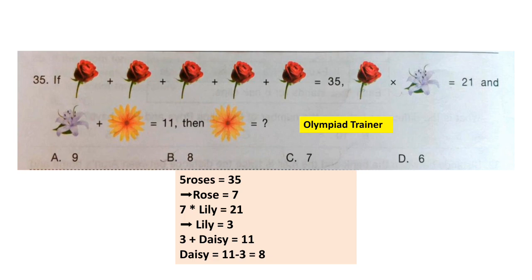Question 35: Look at the problem — you have to find out the values of flowers. Five roses equal 35, so one rose = 35 ÷ 5 = 7. Using that in the second expression, rose × lily = 21, so lily = 21 ÷ 7 = 6. Putting the lily value into the third expression gives the value of the daisy as 11 − 3 = 8. The correct answer is option B: 8.